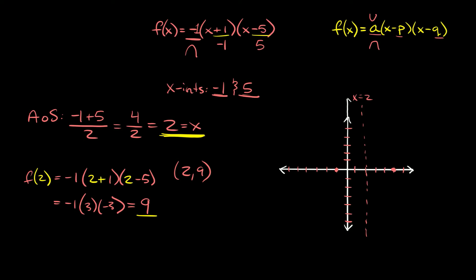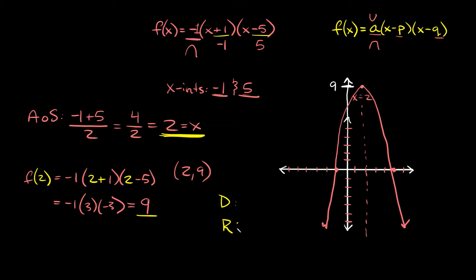We'll raise the graph up and mark 9, so our vertex is at 2 comma 9, running through the x-intercepts. The last two things are the domain and range. The domain is always all real numbers for these parabolas. For the range, the very top of our parabola is at positive 9, and then it runs down toward negative infinity, so the range is y less than or equal to positive 9.